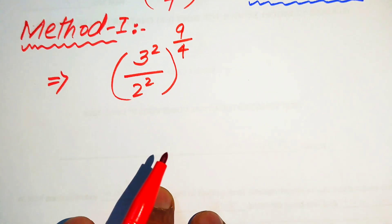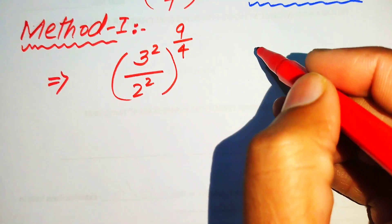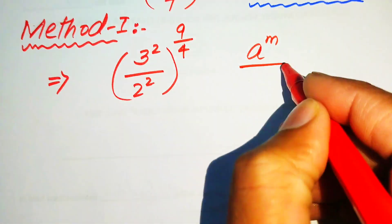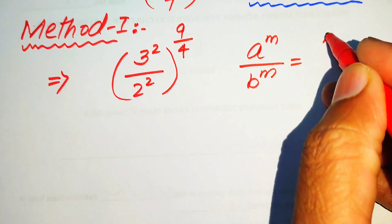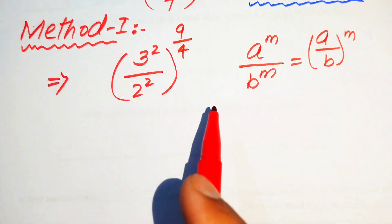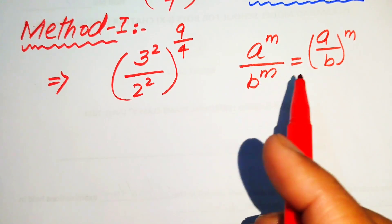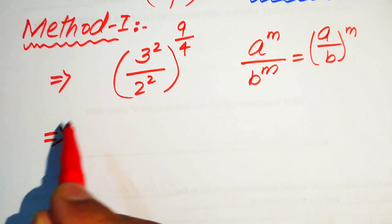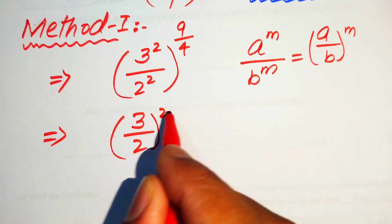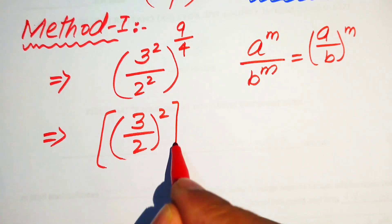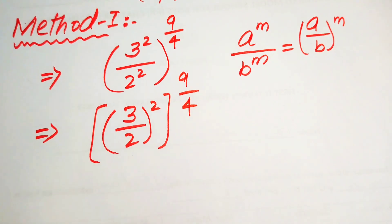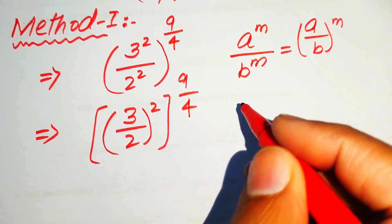In the next step, we use the exponential law: a^m / b^m = (a/b)^m. We combine the exponent m on both terms, so this is written as (3/2)² with the whole exponent 9/4.